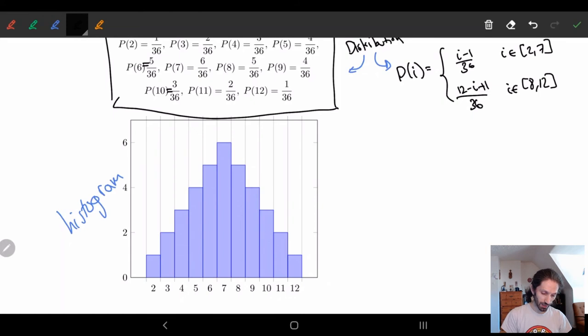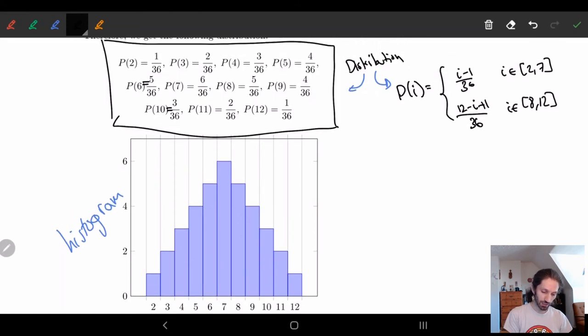And so basically what I have here is instead of looking at this enumerate denominator, because the denominator, we can just make them all the same. Once they're all the same, I can just see how many times I can get that. So two, I'll have exactly one time. And so I put it at a bar of one.